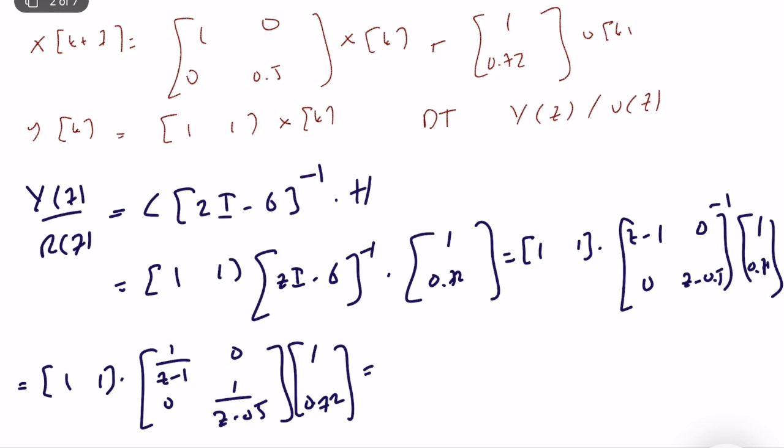So if I compute that, 1, 1 over (z minus 1). That's great. 1 over (z minus 1) plus... this is equal to 0.72 divided by (z minus 0.5). So I computed discrete time transfer function.